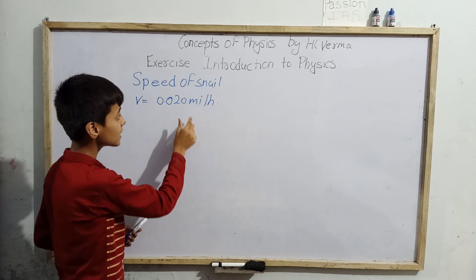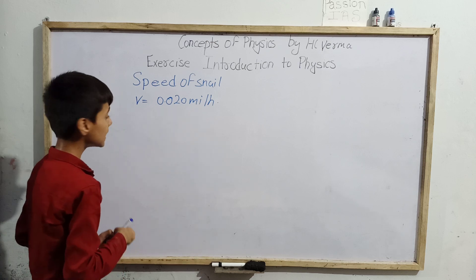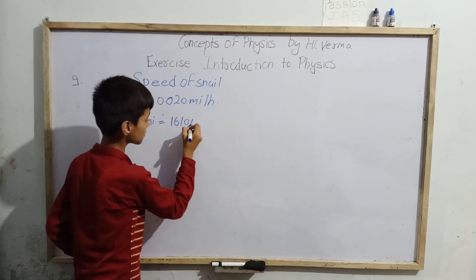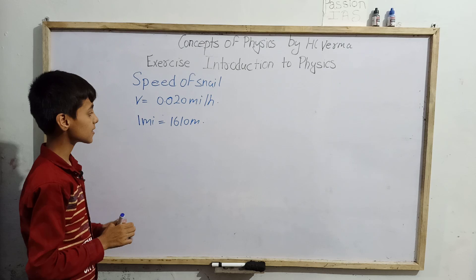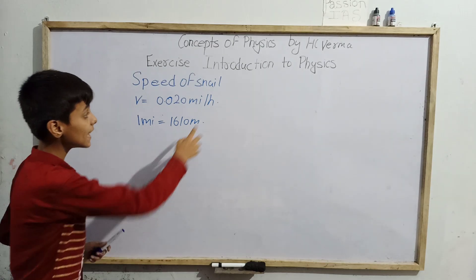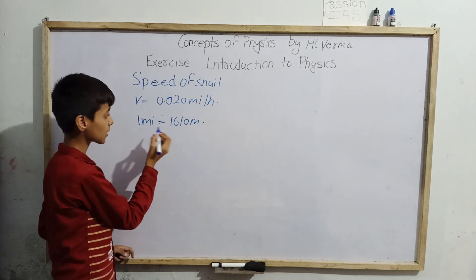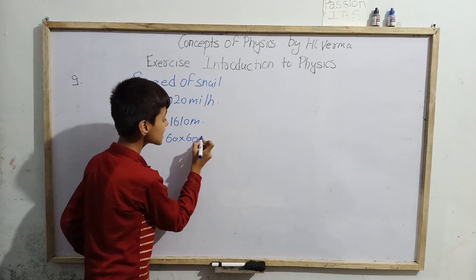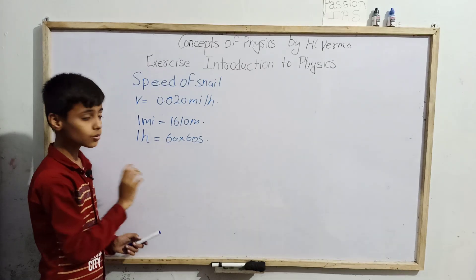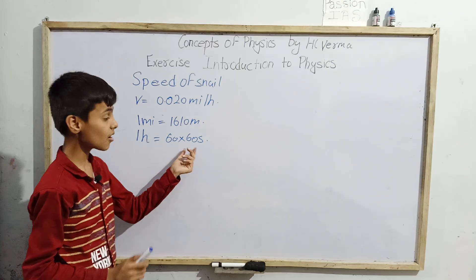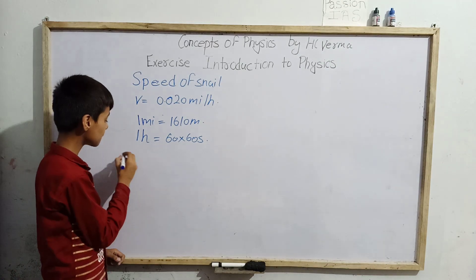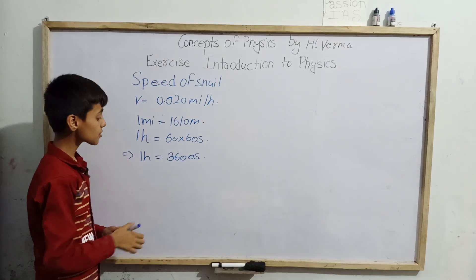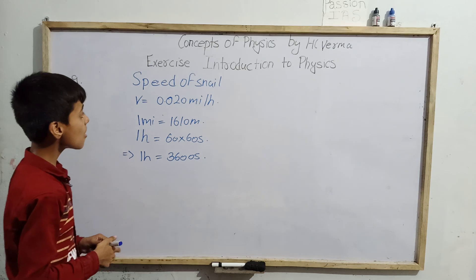Now the question arises: how many meters are in one mile? One mile consists of 1610 meters. And in one hour, how many seconds? Since one hour has 60 minutes and each minute has 60 seconds, one hour equals 3600 seconds.